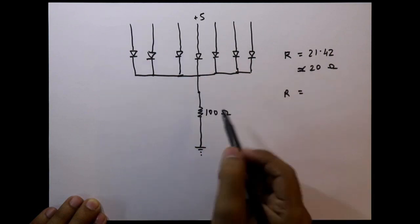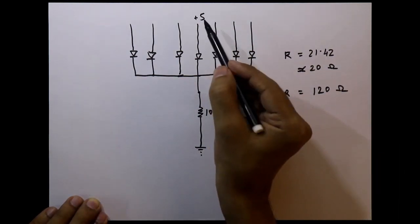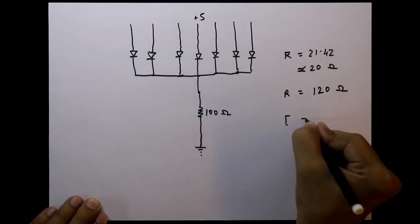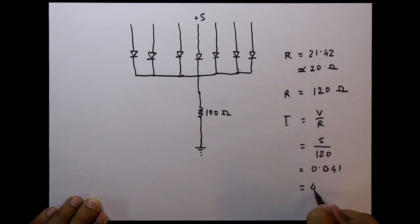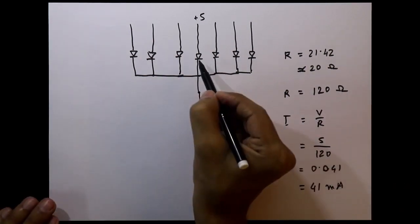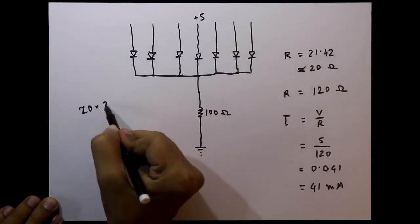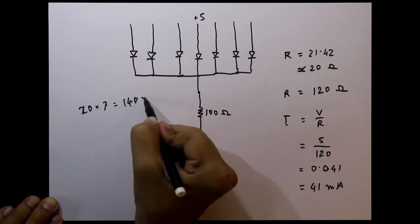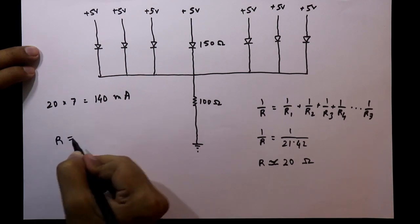The total resistance of the circuit is 20 ohms (LEDs) plus 100 ohms (resistor) = 120 ohms. Supply voltage is plus 5 volts, so current is V/R = 5/120 = 0.041 A, that is 41 milliamperes. But each LED needs 20 milliamperes, so 7 LEDs need 20 × 7 = 140 milliamperes — yet we only have 41 milliamperes. That is why brightness decreases as more LEDs are added.